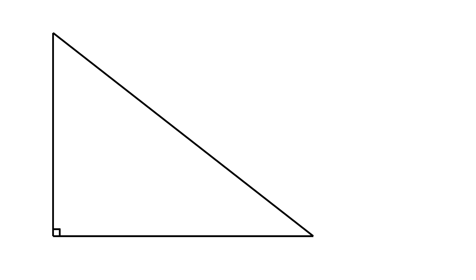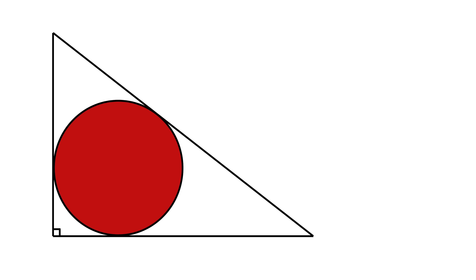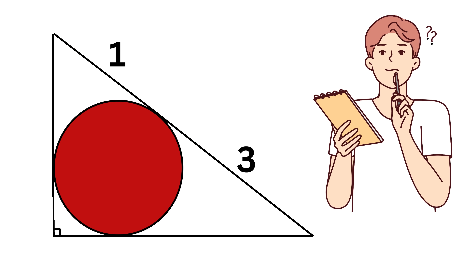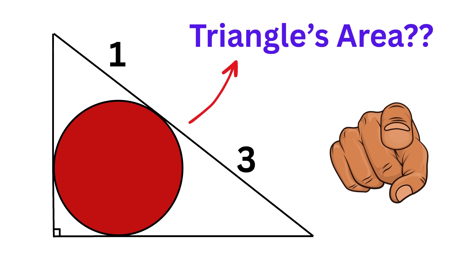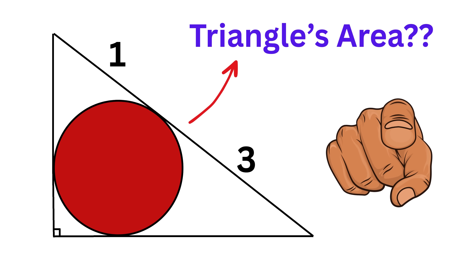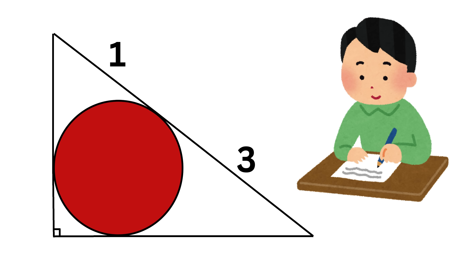We have a right triangle with an inscribed circle, where the length of one piece is one unit and the length of another piece is three units. Using only this information, we need to find the area of this right triangle.